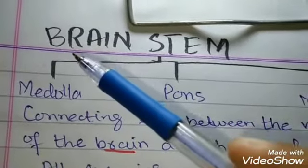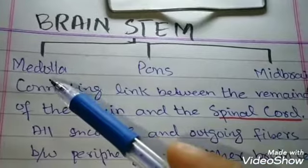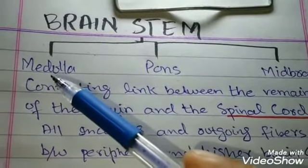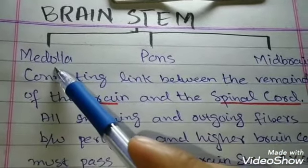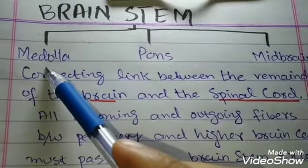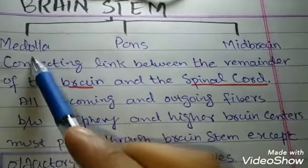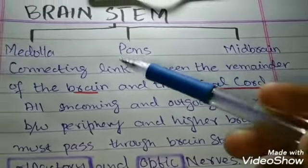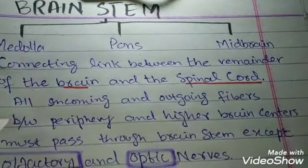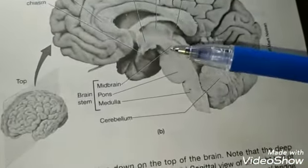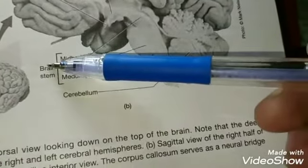In this video lecture we will talk about the brainstem. The brainstem includes three parts: the first one is medulla (or medulla oblongata), pons, and midbrain. These three parts — medulla, pons, and midbrain — are collectively called the brainstem. This is the sagittal view of the right side of the brain, showing midbrain, pons, and medulla.